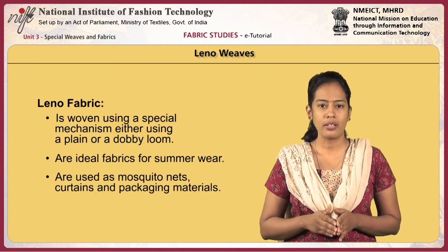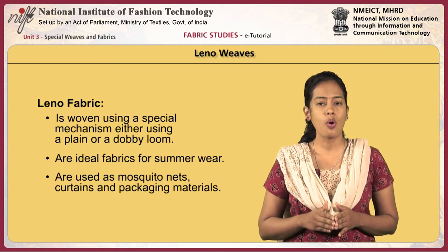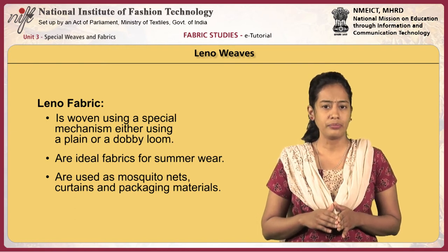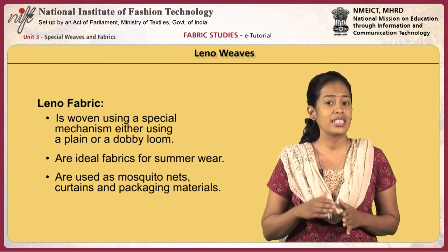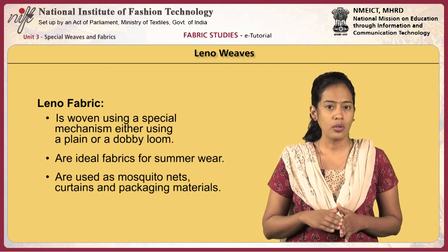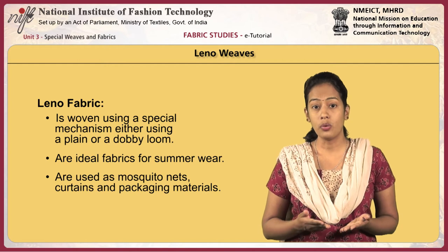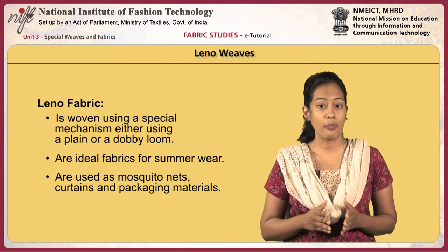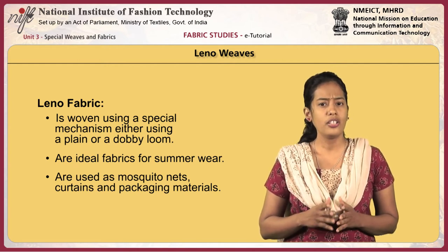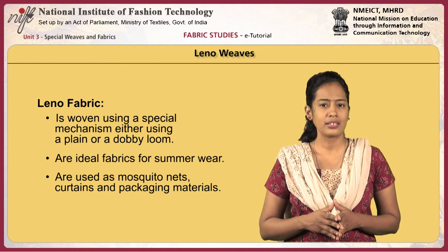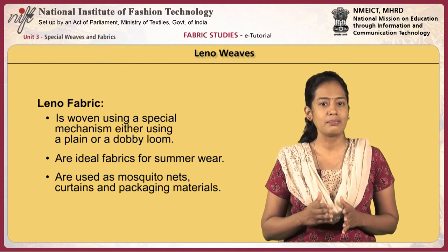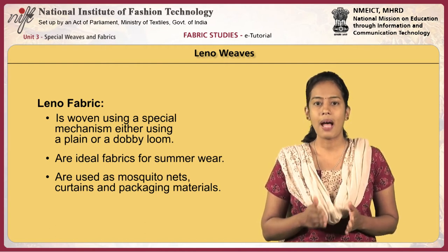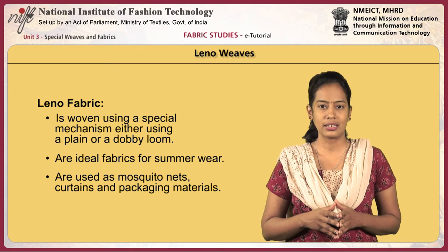Leno fabric is woven using a special mechanism, either using a plain or a dobby loom. They are ideal fabrics for summer wear. Leno fabrics are used as mosquito nets, curtains, and packaging materials.